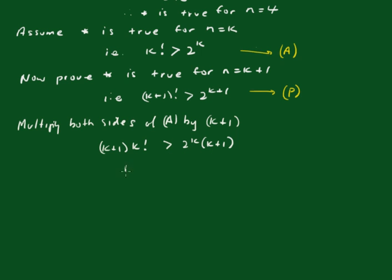That is, k plus 1 factorial is greater than 2 to the k times k plus 1.